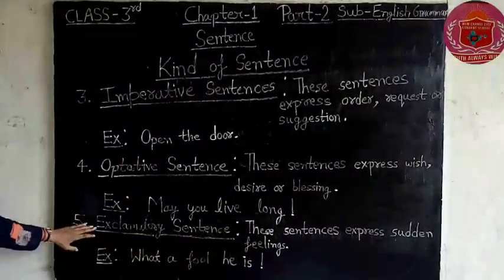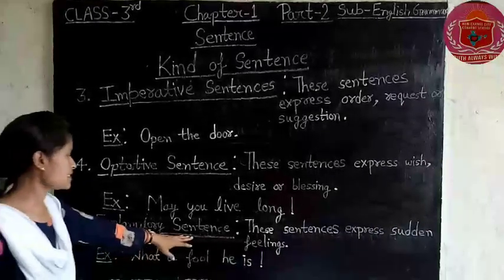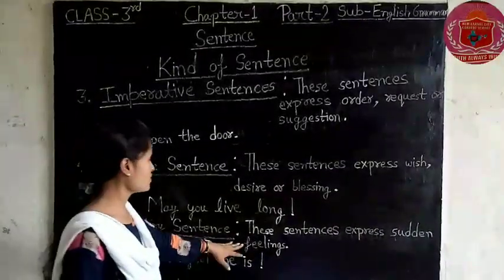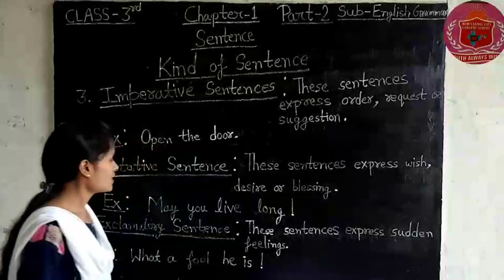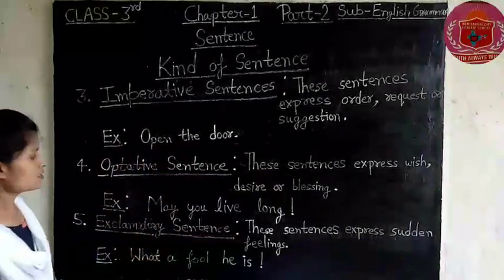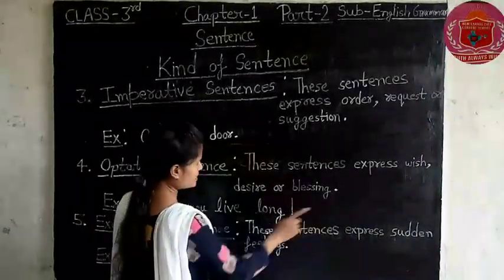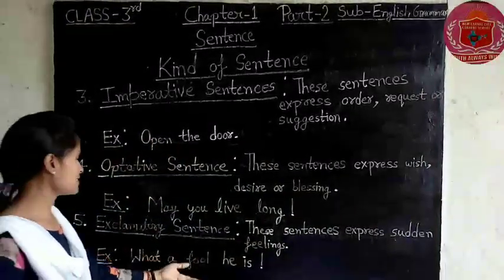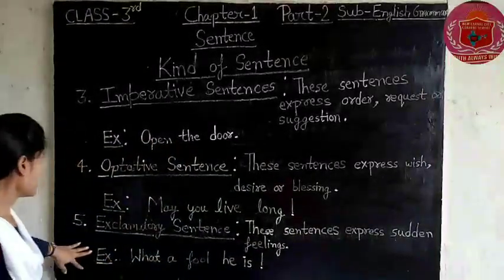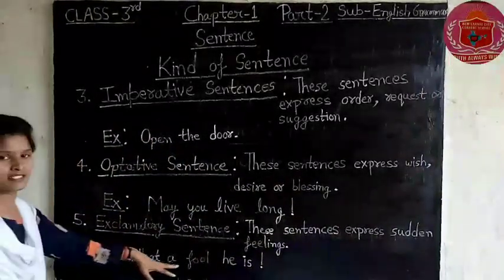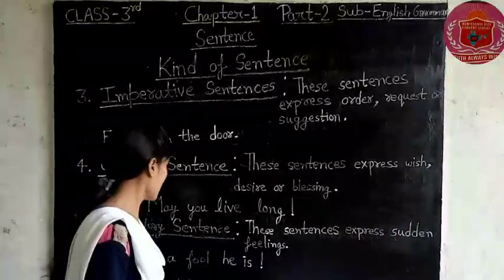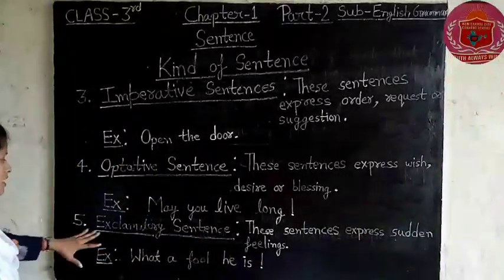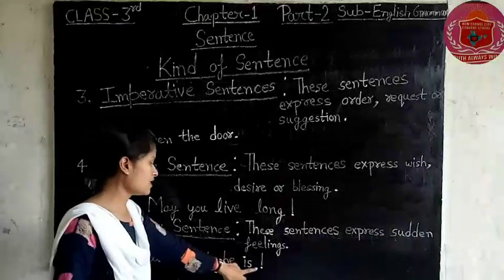Now next is exclamatory sentences. In these sentences, they express sudden feelings. For example, it is about expressing a strong or sudden emotion, and exclamatory sentences are noted with an exclamation mark.